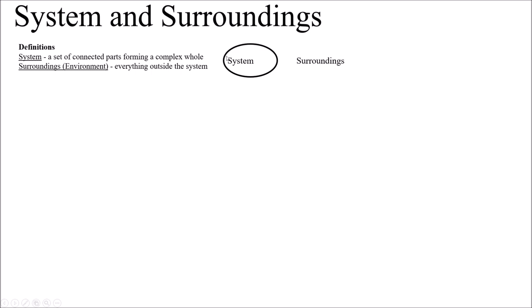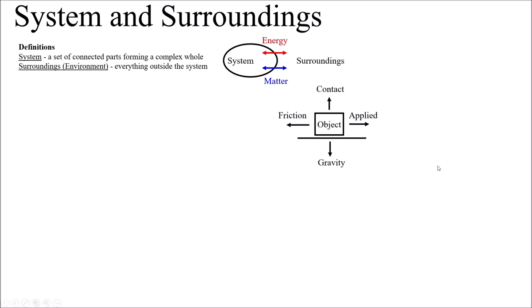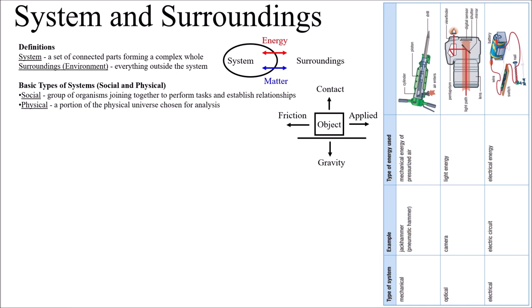A system is anything you define to be a system — a set of parts that come together to make a whole. Anything outside the system is called the surroundings or environment. We often talk about energy or matter entering or leaving the system. For example, if I push an object to the right but it doesn't move, there's no net force — but that doesn't mean no forces exist. We can identify four interactions: applied force to the right, friction counteracting it, a normal force upward from the floor, and gravity pulling down.